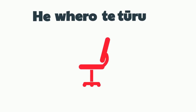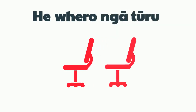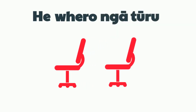He whero te tūru — the chair is red. If we're talking about more than one chair, we only have to change te to ngā. He whero ngā tūru — the chairs are red.